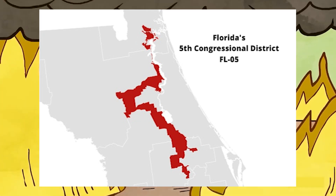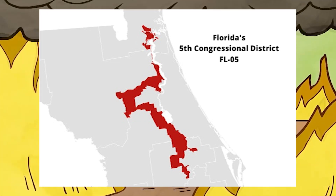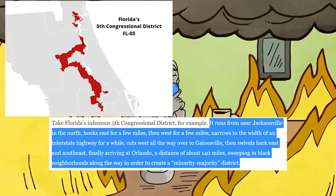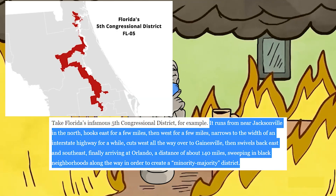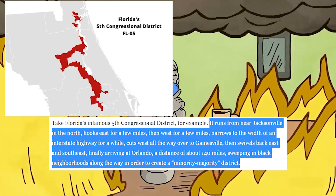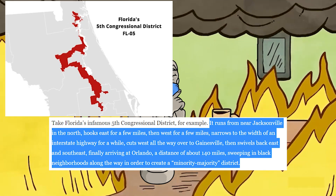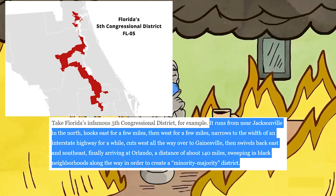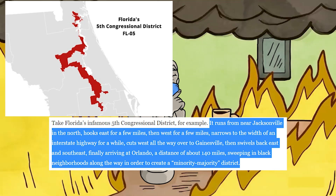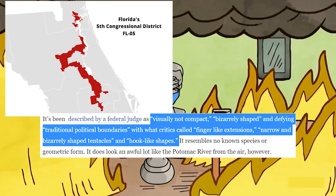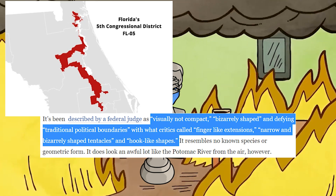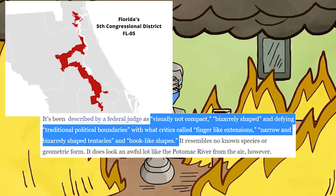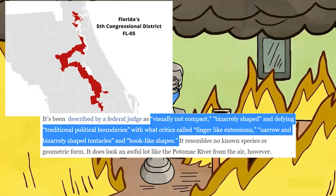This is what used to be Florida's 5th congressional district before the Florida Supreme Court threw it out. The Washington Post described it as running from near Jacksonville in the north, hooking east for a few miles, then west for a few miles, narrowing to the width of the interstate for a while, cutting west all the way over to Gainesville, then swiveling back east and southeast, finally arriving in Orlando over a distance of about 140 miles, sweeping in black neighborhoods along the way to create a minority-majority district. A federal judge said it was visually not compact, bizarrely shaped, and defied traditional political boundaries with finger-like extensions, narrow and bizarrely shaped tentacles, and hook-like shapes. And he wasn't wrong.